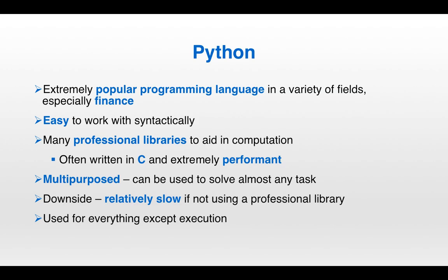We'll begin with the programming language Python. Python is an extremely popular language in a variety of fields — it's especially popular in finance. That's because it's very easy to work with syntactically, but at the same time it also has many professional libraries to aid in computation. While these libraries are accessible in Python, they're not written in Python — they're written in a very fast programming language such as C, and for that reason the libraries themselves are extremely performant.